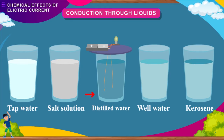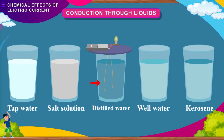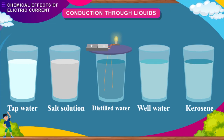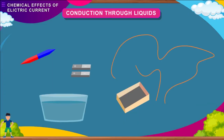Here is an activity to show conduction of electricity through various liquids. Take small quantities of distilled water, common salt solution, tap water, well water, and kerosene. Dip the two free ends of the tester wires in different liquids to check whether they conduct electricity or not. If the bulb glows, they conduct electricity, else they do not. The ends of the wires should be washed and dried before being used again.